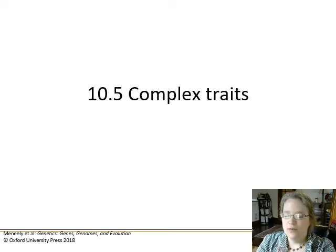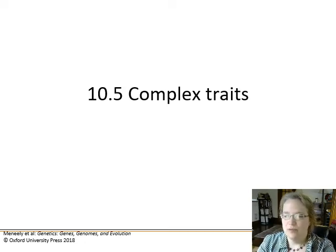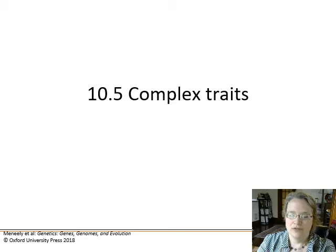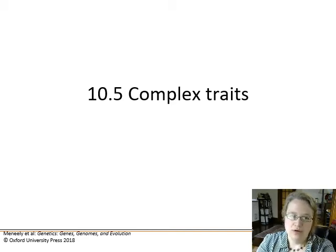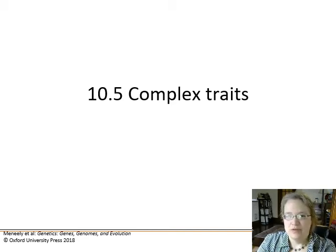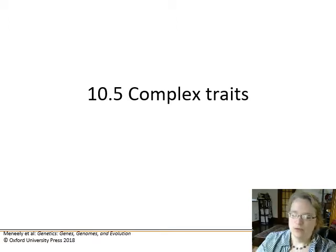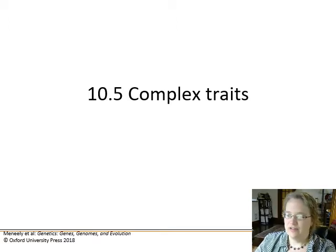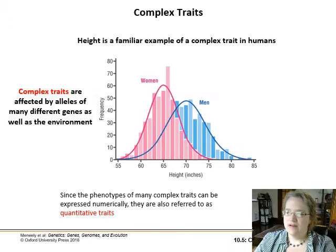Next part of chapter 5, we're dealing with complex traits, also called polygenic traits or quantitative traits. Basically we give a lot of genes all contributing to a particular phenotype, so height is a really good example.